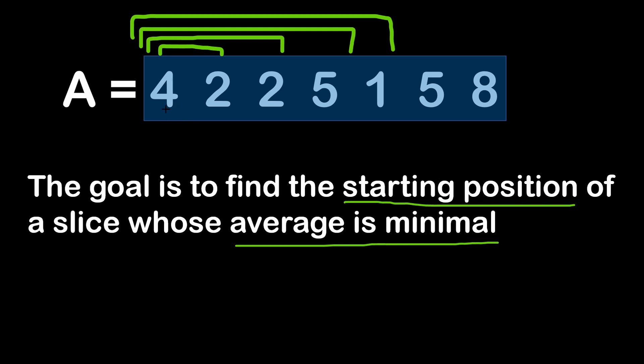So here if we start with the number 4, the first slice is 4 and 2, then we move to the next slice of three numbers, 4, 2 and 2, then 4, 2, 2 and 5, and so on, until we have exhausted all the slices starting at this particular position with the number 4.